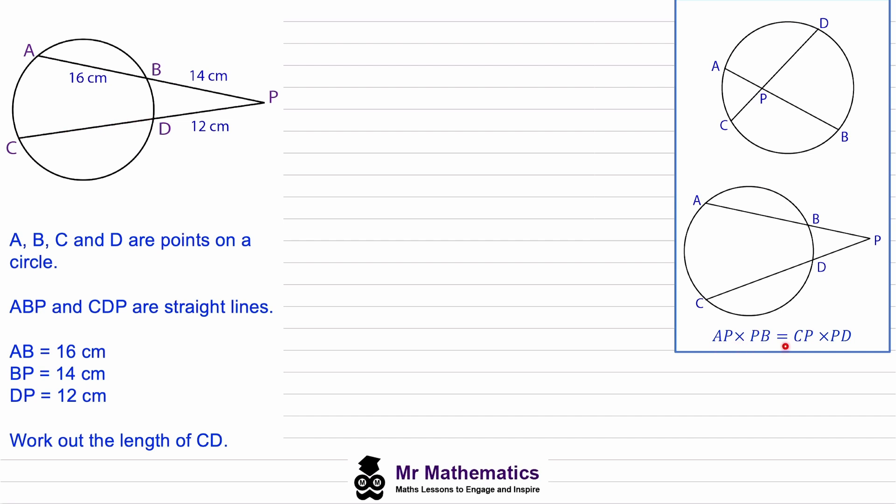So we can use this equation again. The AP is this length, so 16 add 14 which is 30, multiplied by PB which is the exterior length of 14. And this will equal CP which is that full length.